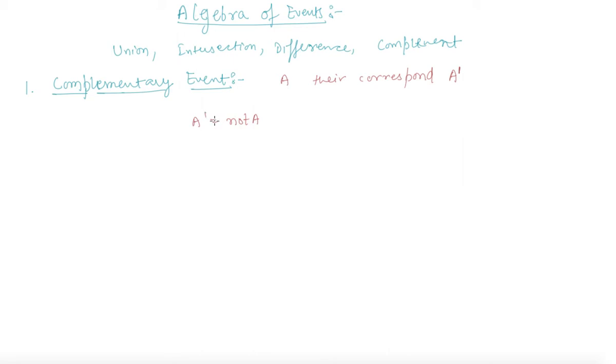A dash equals not A. Let's say we are taking an example of tossing three coins. The sample space would look like HHH, HHT, HTH, THH, HTT, THT, TTH, and TTT. This is the sample space when you toss three coins.